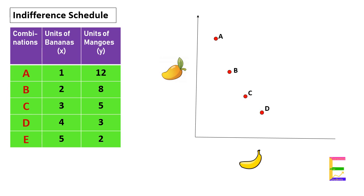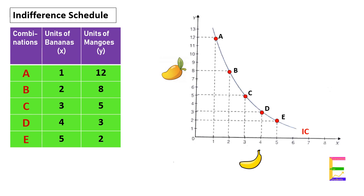Now if we plot the combinations of goods A, B, C, D, and E in the xy plane, we will get the indifference curve of the consumer.